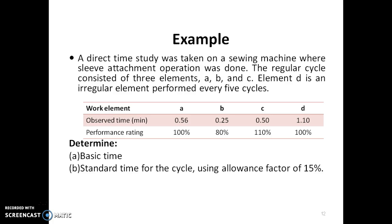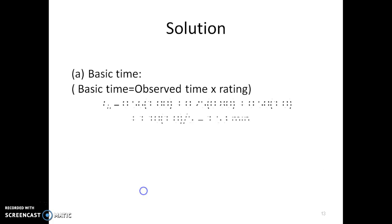Now we have to calculate basic time and standard time for the cycle using an allowance factor of 15%. Since the basic time is observed time times rating, you can simply calculate the basic time as follows: 0.56 is the observed time of the first element multiplied by corresponding rating, plus second element observed time multiplied by its rating, plus third observed time multiplied by rating. Finally, the irregular element multiplied by rating gets divided by 5 because it repeats only every 5 cycles. The total basic time is the sum of all the basic times.